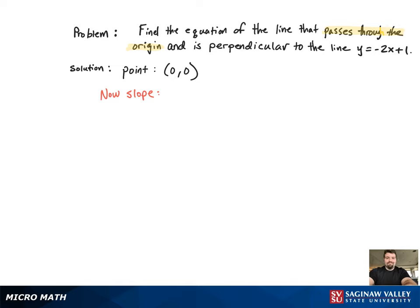What we're going to do is find the slope of the perpendicular line, and then we'll use that to find the slope of our line.